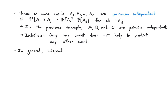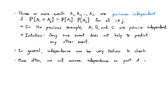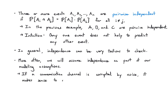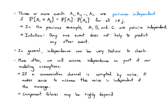In general, independence can be really tedious to check. More often, we will assume independence as part of our modeling assumptions. For example, in a communications channel facing noise, it makes sense to assume noise is independent of what we transmit — the noise doesn't know what message we're sending. Similarly, component failures across different cars are probably independent, even if failures within the same car might be correlated.